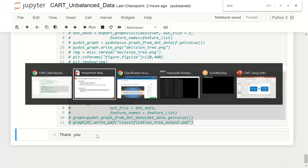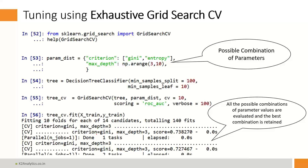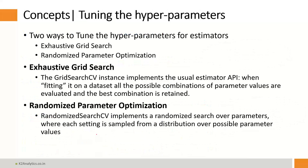There is also a simple concept called randomized search cross-validation. Just like grid search cross-validation, there is another Python function called RandomizedSearchCV. I leave that as homework for you to try out while building machine learning models.